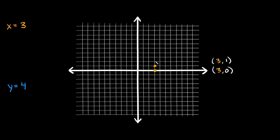Let's plot a few more points. This next point sits at 3 comma 2. And it's the same thing going down — if I wanted to plot this point right here, it would be at 3 comma negative 1. And one last point right here would be at 3 comma negative 2.